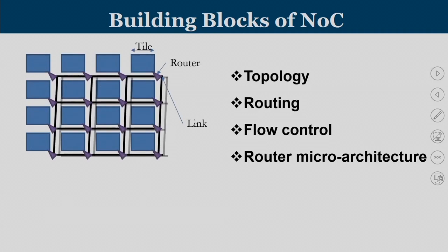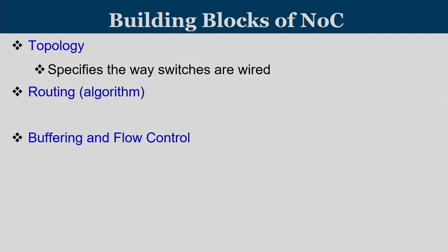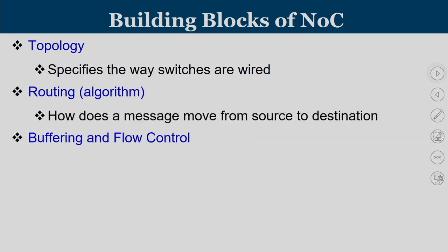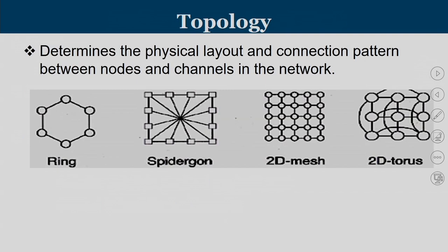The basic building blocks of a network on chip are: topology, routing, flow control, and router microarchitecture. Topology specifies the way switches or routers are wired. The routing algorithm tells how a packet moves from one tile to another. Buffering and flow control deal with the basic unit of transfer and how handshake signals are passed between routers. Topology determines the physical layout and connection pattern between nodes and channels in a network. Different topologies include ring, spider-gun, two-dimensional mesh, and two-dimensional torus.